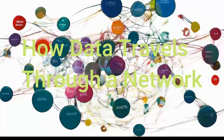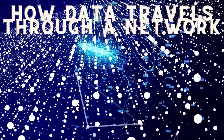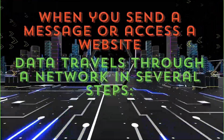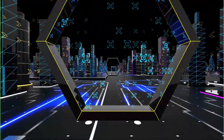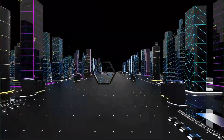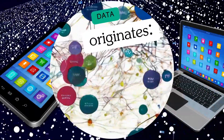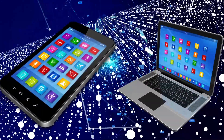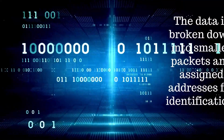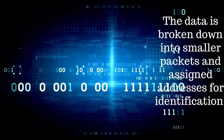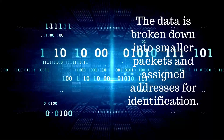How does data travel through a network? When you send a message or access a website, data travels through a network in several steps. First, the data originates on your device, like a computer or phone. Then, packaging: the data is broken down into smaller packets and assigned addresses for identification.